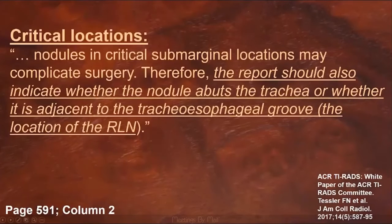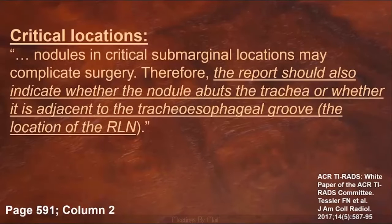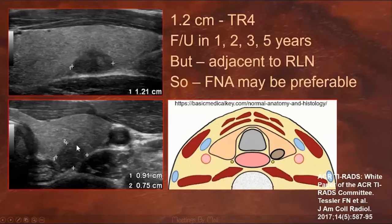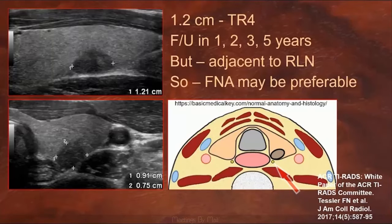Sherry Teefy, one of the co-authors, reminded the committee that nodules in critical sub-marginal locations may complicate surgery. Therefore, the report should also indicate whether the nodule abuts the trachea or whether it is adjacent to the tracheoesophageal groove, which is the location of the recurrent laryngeal nerve. For instance, this is a 1.2-centimeter TR4 nodule that would normally be followed, but its location deep in the posterior aspect of the thyroid is immediately adjacent to the recurrent laryngeal nerve. So the surgeon may actually prefer to do an FNA, and if it is cancer, resect it before it has a chance to grow and possibly invade the recurrent laryngeal nerve.